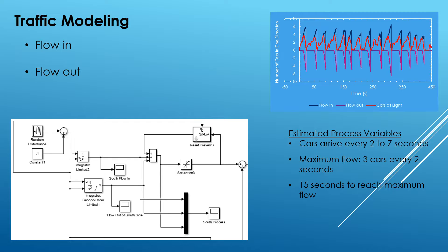The way we went about modeling this process was using a simplified version of an intersection. We assumed no turns — just straight-through traffic. We broke it up into the four sides of an intersection and looked at each one individually: the flow in and the flow out. We estimated that there would be about one car arriving every two to seven seconds, with some variation depending on location and time of day. We built a ramp to model this and included random disturbances to simulate what would actually happen.